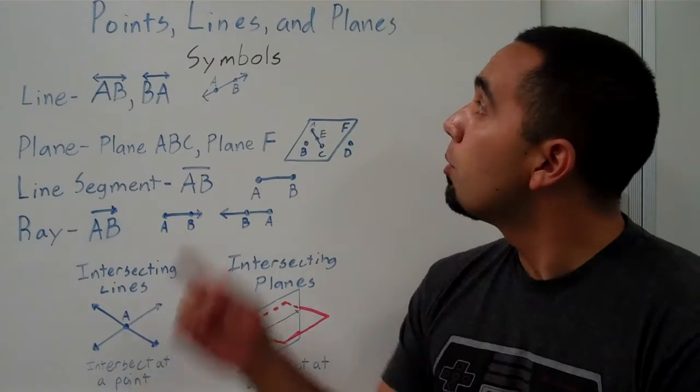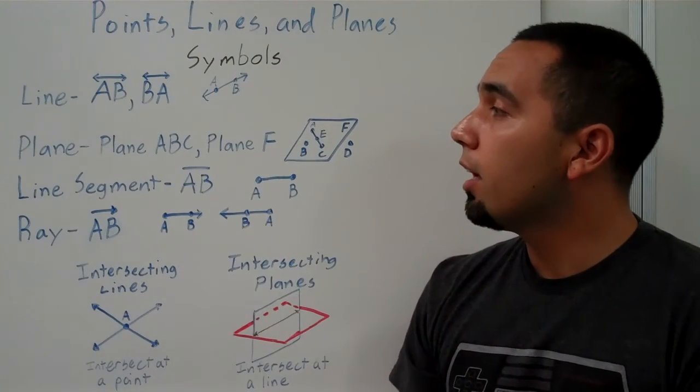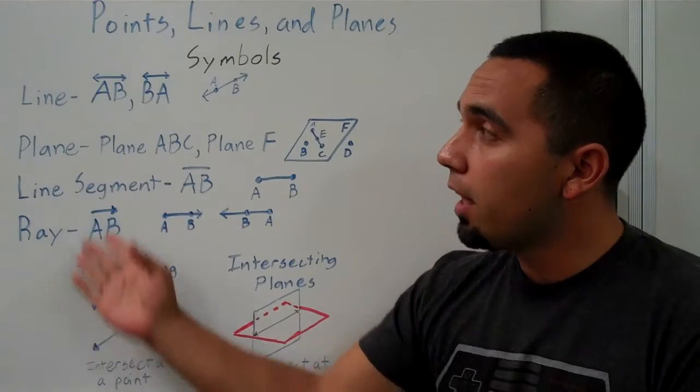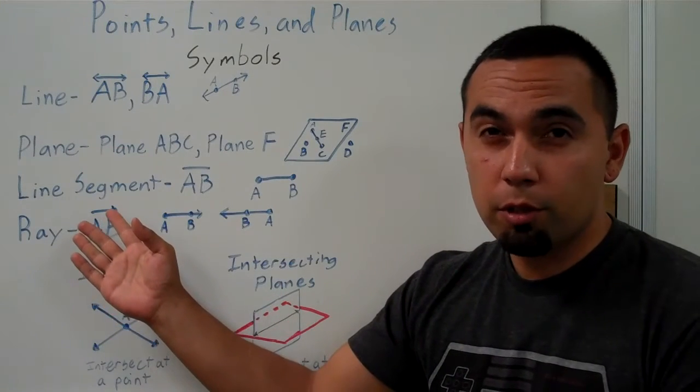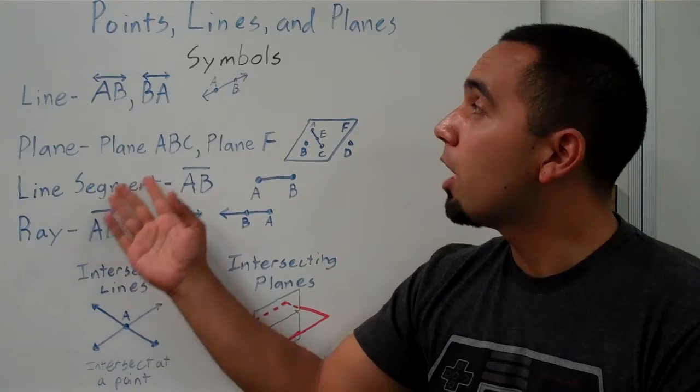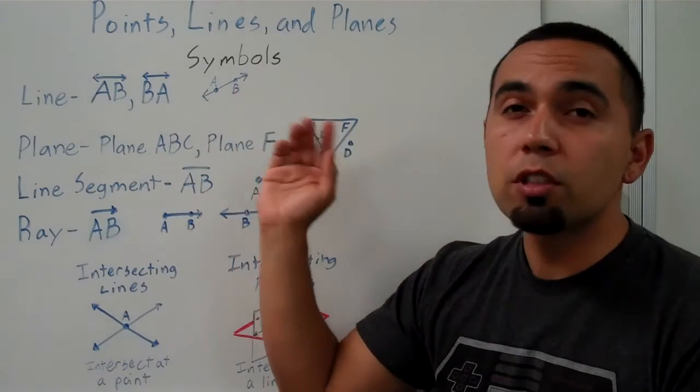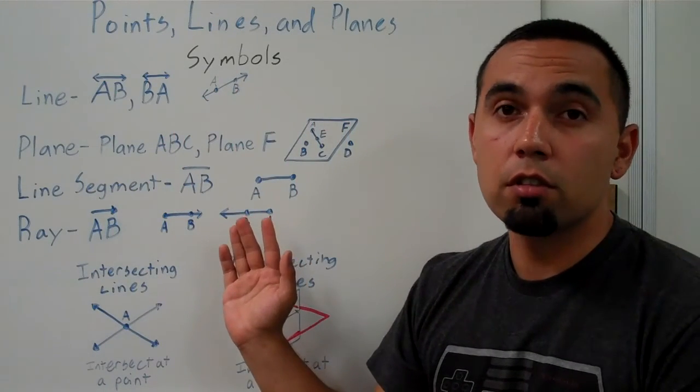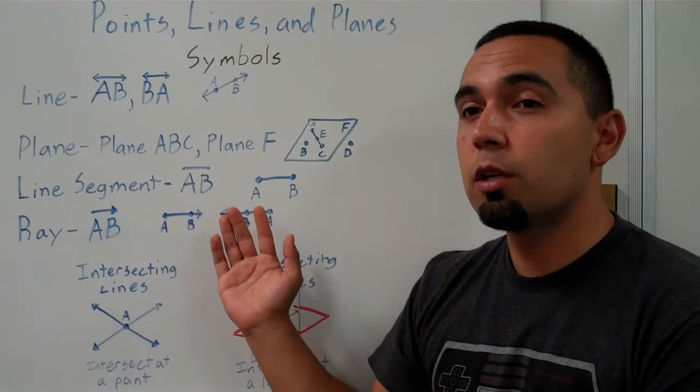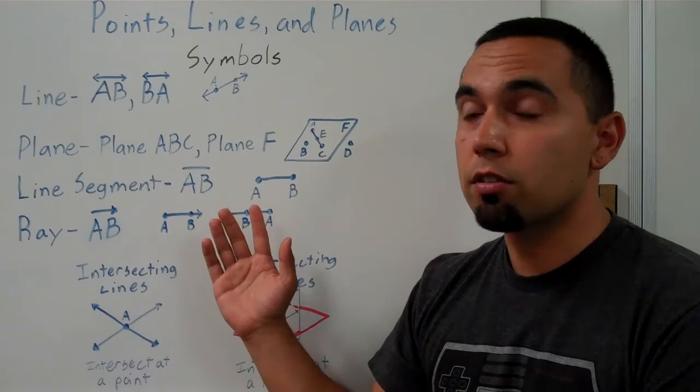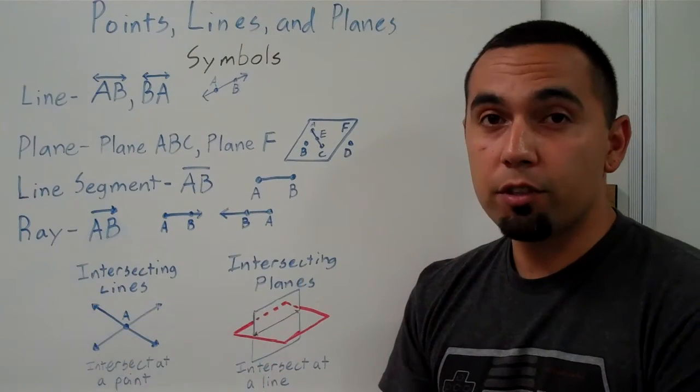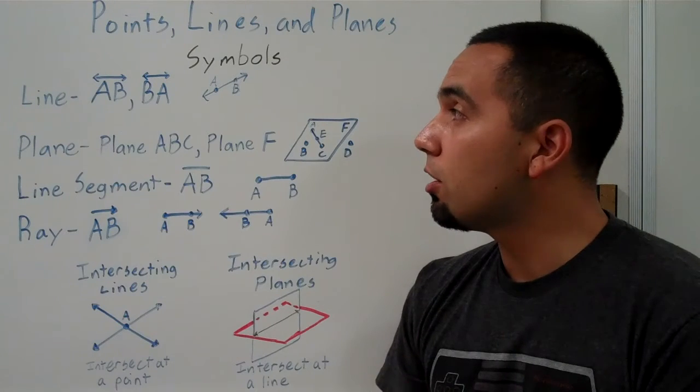So we're going to start off with points, lines, and planes, and we should have already defined these terms. That was the homework the other day, but I think it's good to have symbols as well as pictures to go with our definitions. If we don't have those, we need to add these to our definitions. If you have your definitions out, that's great. Let's go ahead and get started.